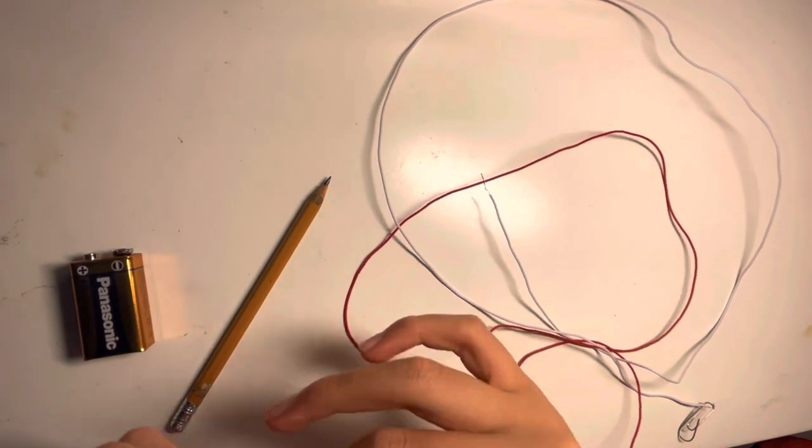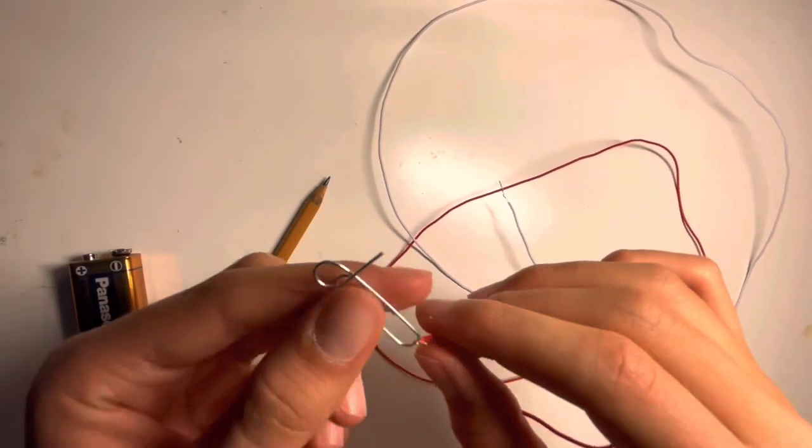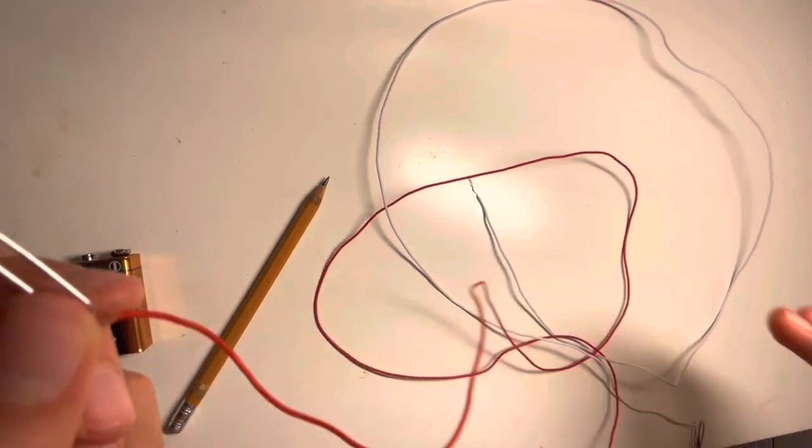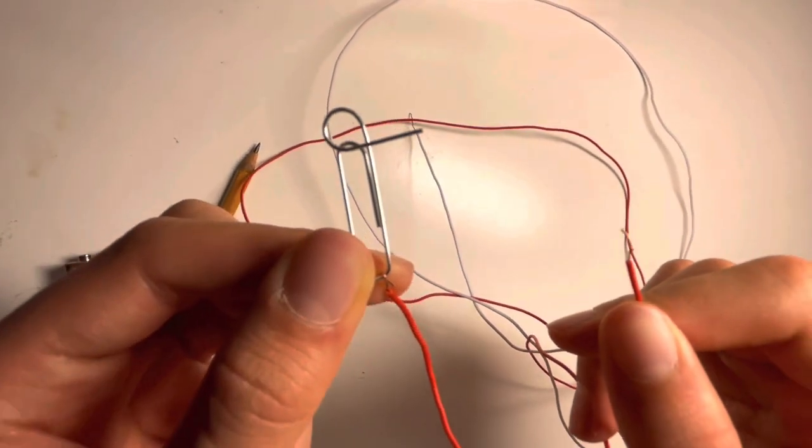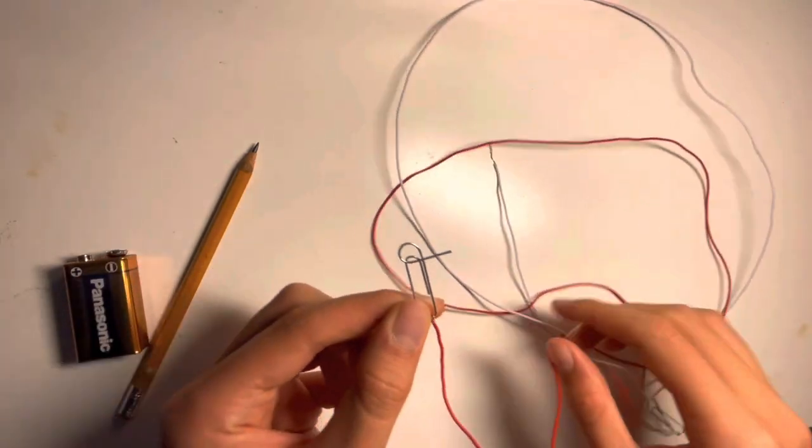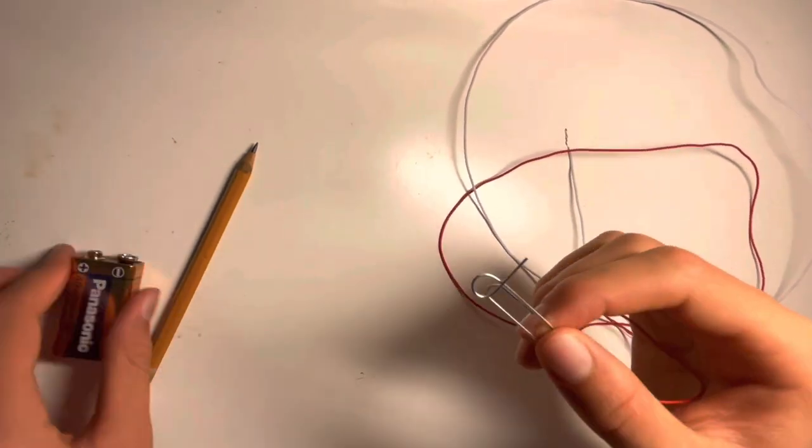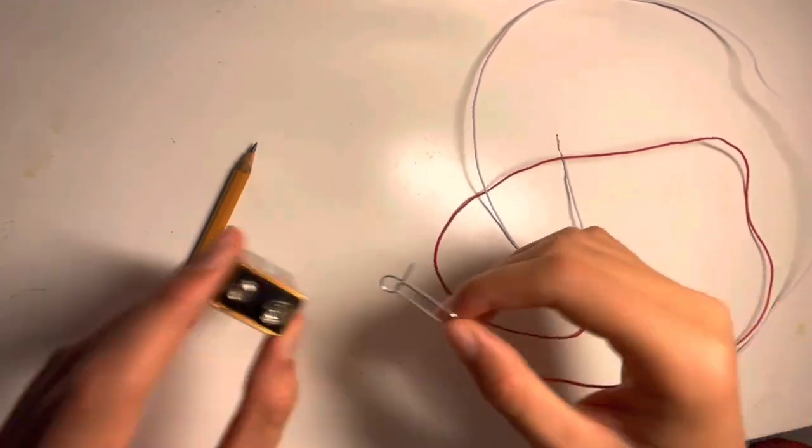And then with the fourth ingredient being paper clips, which you attach to one end, and on the other end you just want it plain like so. With the paper clips you can easily attach it to the battery.